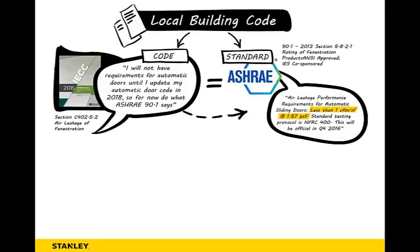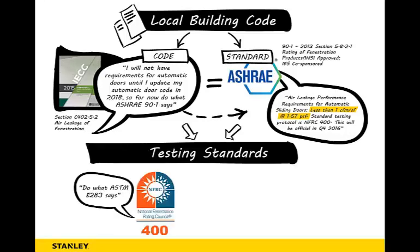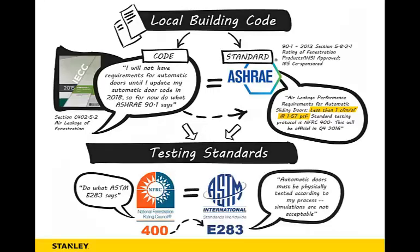The standard testing protocol is in FRC 400. This will be official in the fall of 2016. When referencing the National Fenestration Rating Council for testing protocol, they say do what ASTM E-283 says. ASTM E-283 says automatic doors must be physically tested according to its process. Simulations are not acceptable.